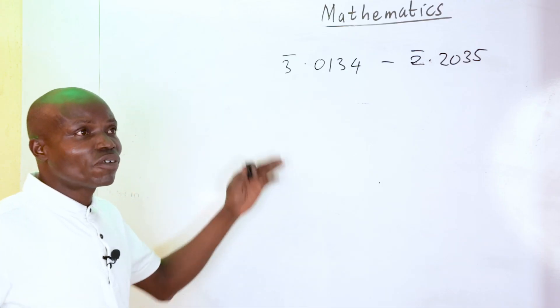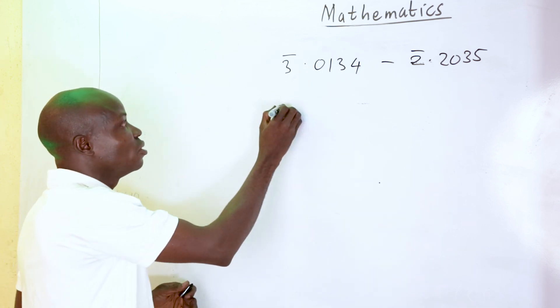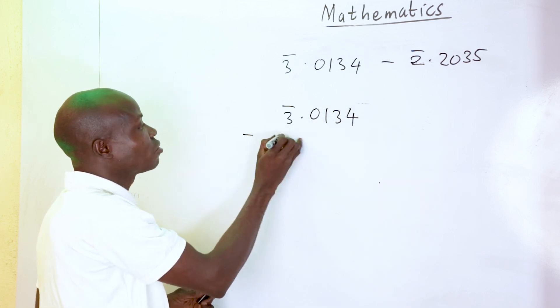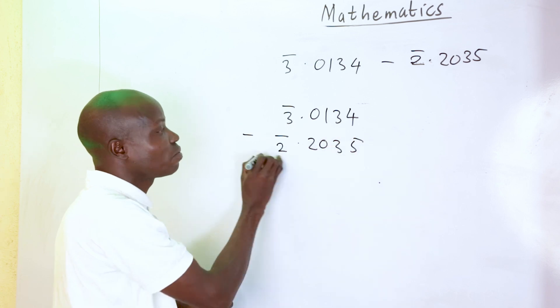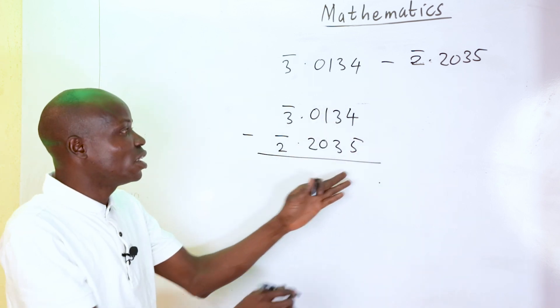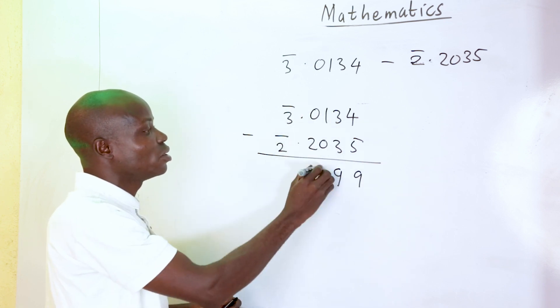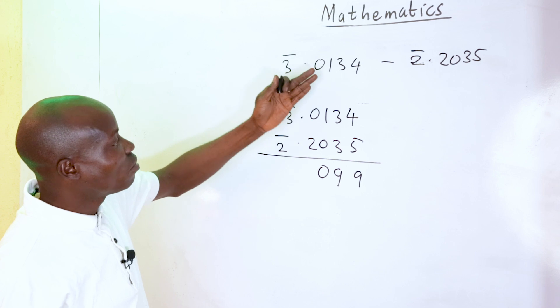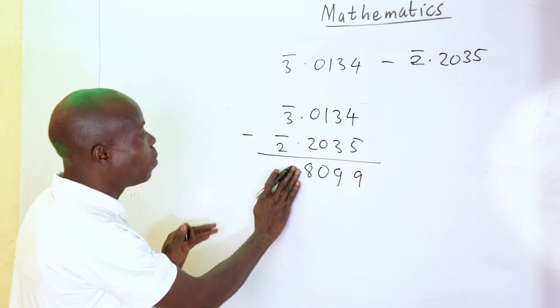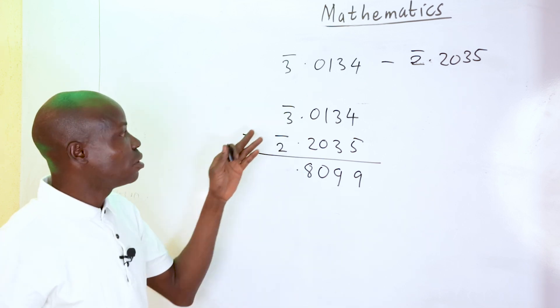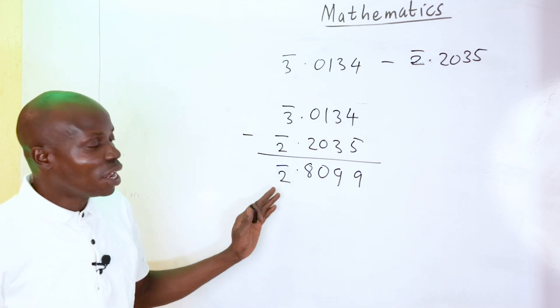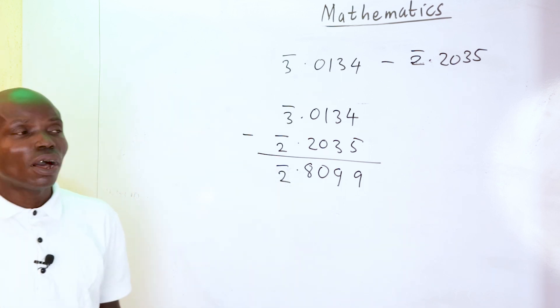Number 60: evaluate bar 3.0134 minus bar 2.2035. Working through the subtraction: 14 minus 5 gives 9, 12 minus 5 gives 9 (with borrowing giving 10 minus 2 equals 8), and bar 4 minus bar 2 gives bar 2. The answer is bar 2.8099, which corresponds to option C.